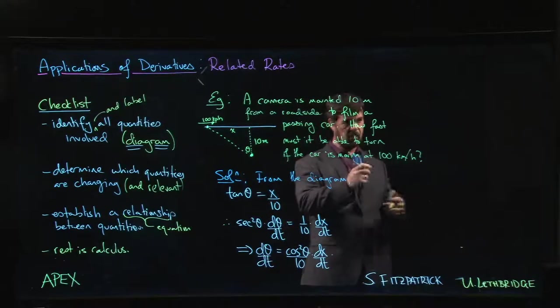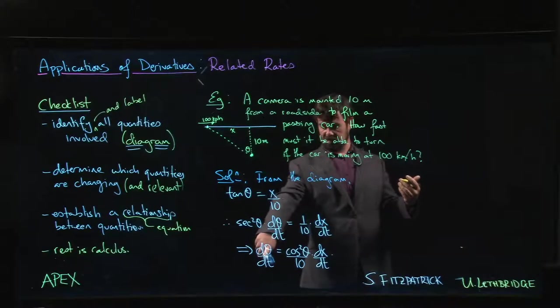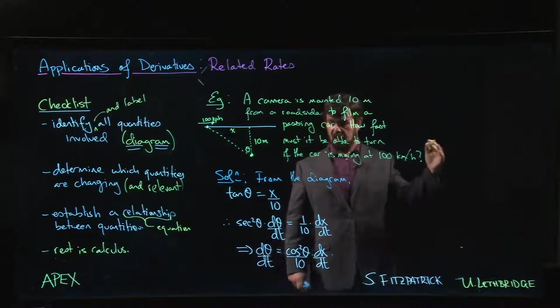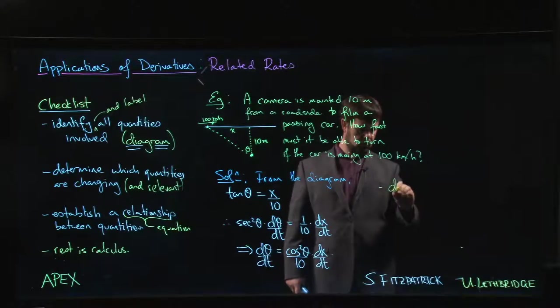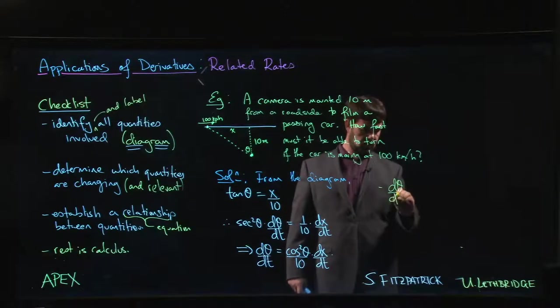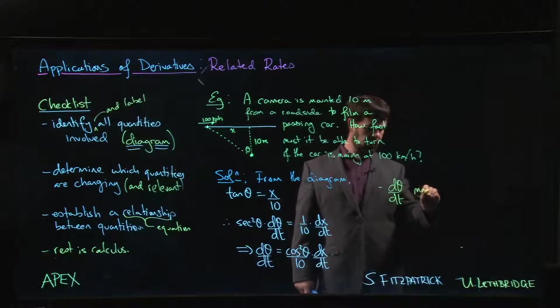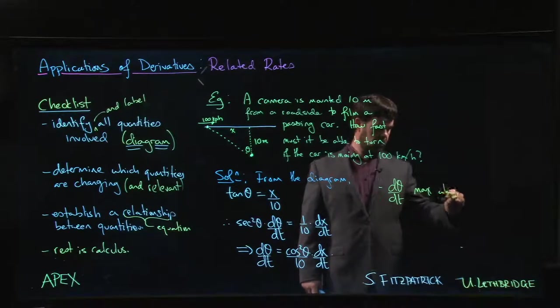We want to be able to capture the whole thing. What's the biggest that this thing has to be? What's the fastest rate that dθ/dt has to be? dθ/dt will be a max when θ is equal to 0.